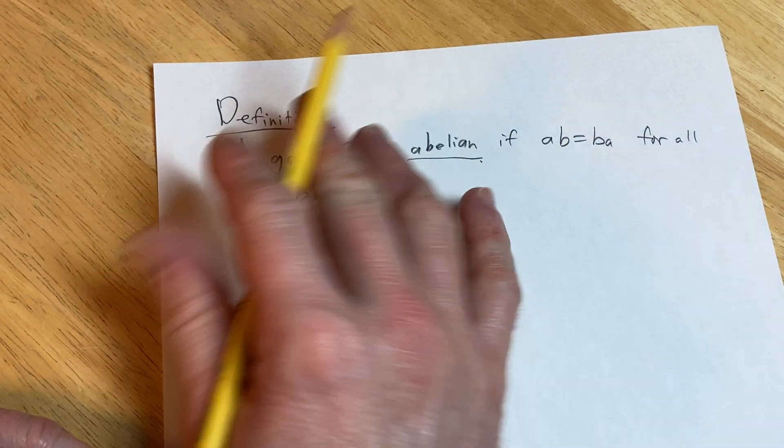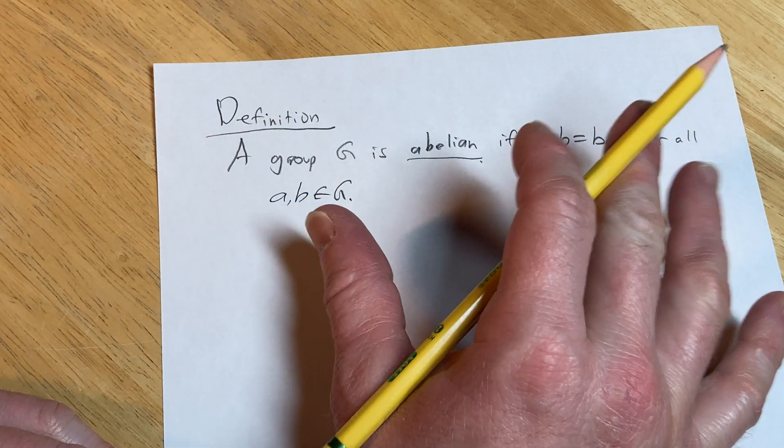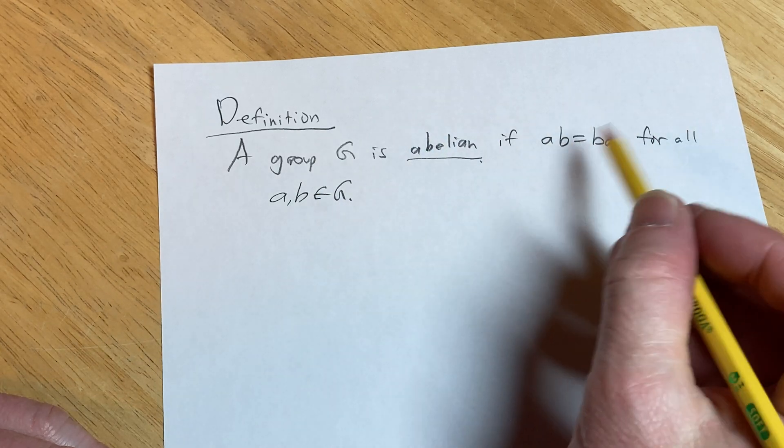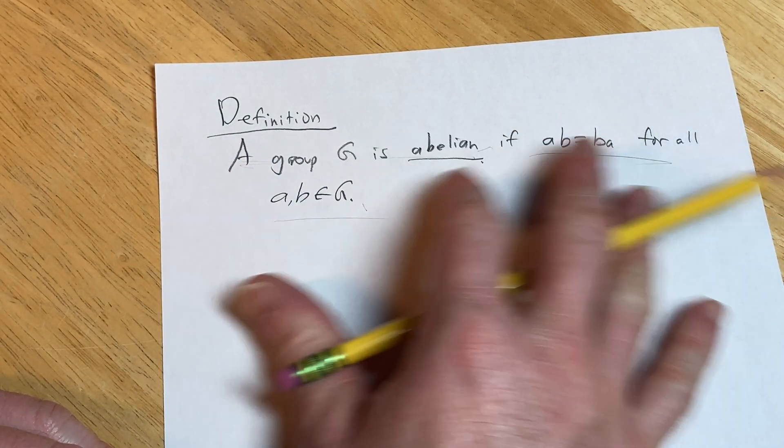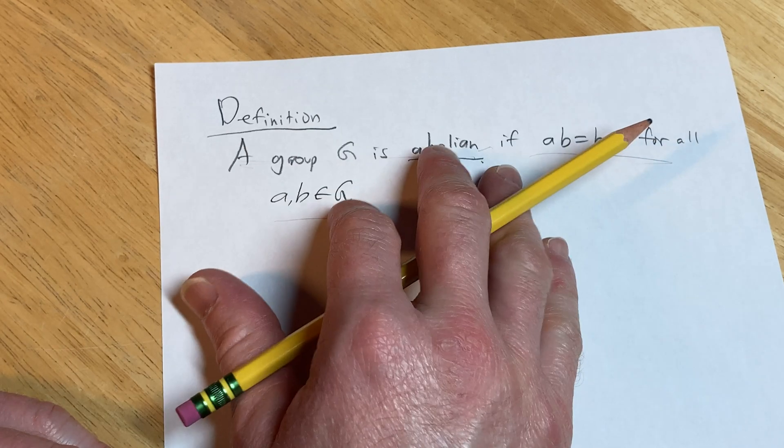It's a definition, by the way. Definitions are always if and only if statements by default. If this is true, then we say it's abelian. If it's abelian, then this is true. So it goes both ways in definitions.